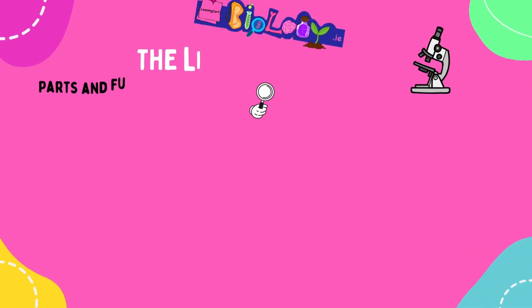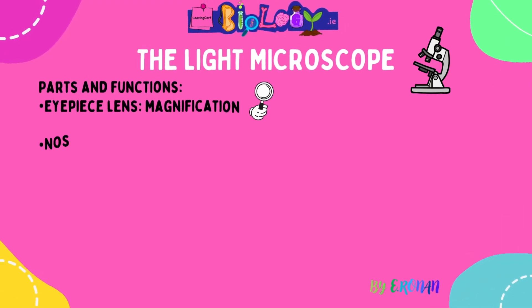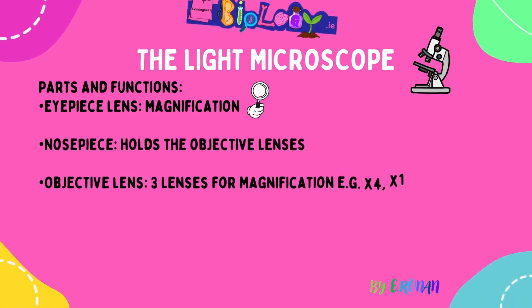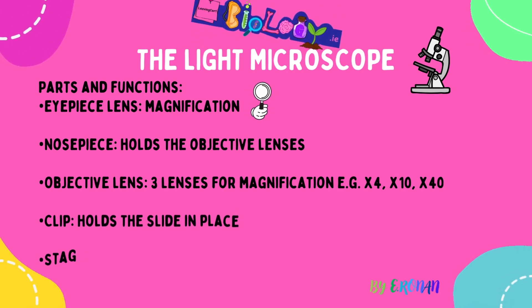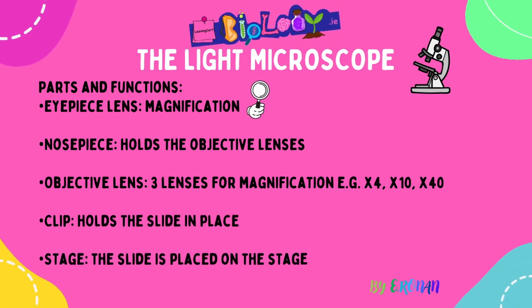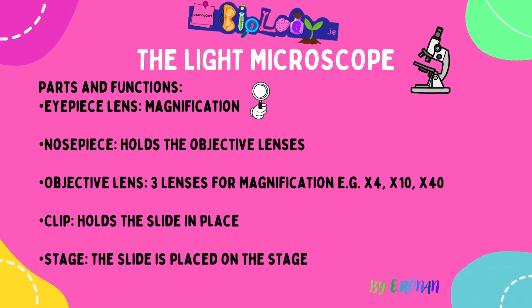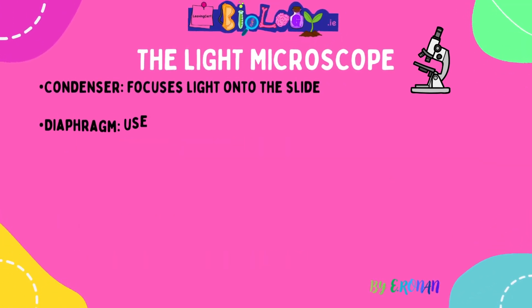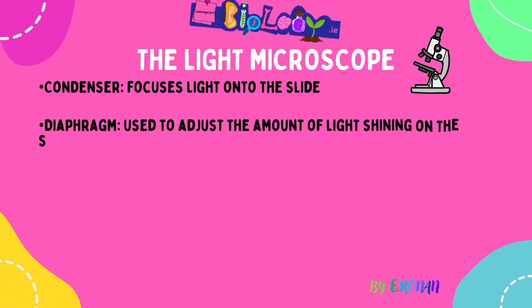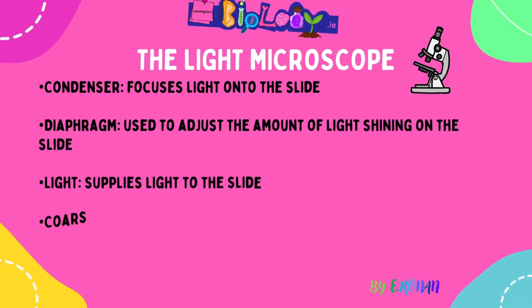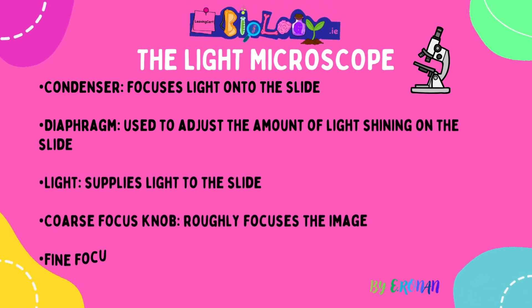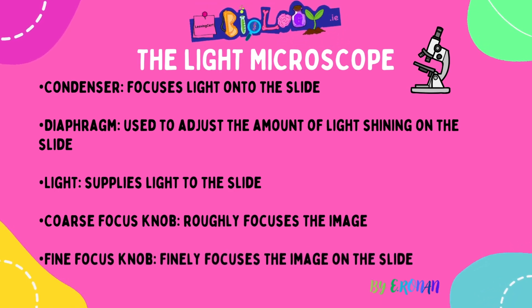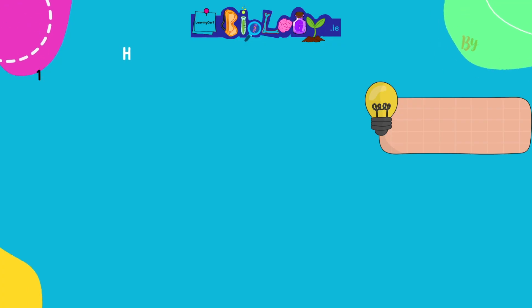Let's look at the light microscope parts and functions. The eyepiece lens is for magnification. The nosepiece holds the objective lenses. There are usually three objective lenses: ×4, ×10, and ×40. Clips hold the slide in place. The stage is where the slide is placed. The condenser focuses light onto the slide. The diaphragm adjusts the amount of light shining onto the slide. The light supplies light to the slide. The coarse focus roughly focuses the image, and the fine focus precisely focuses the image.